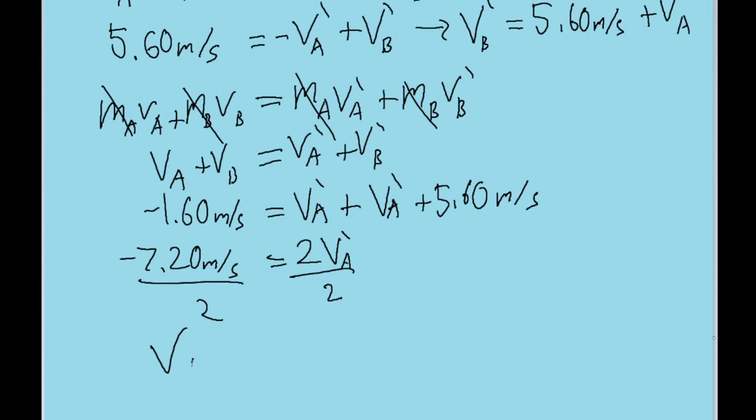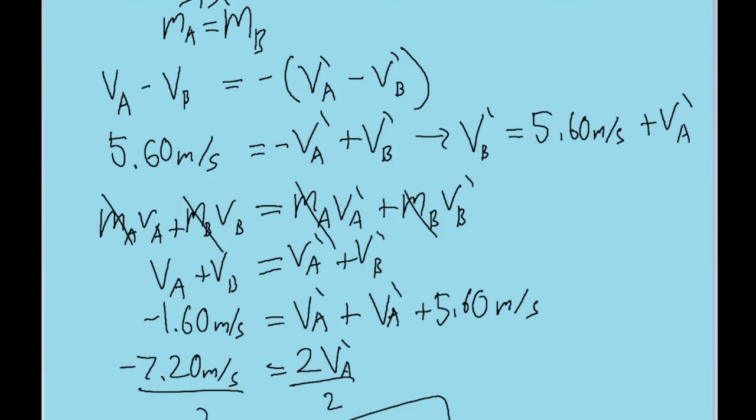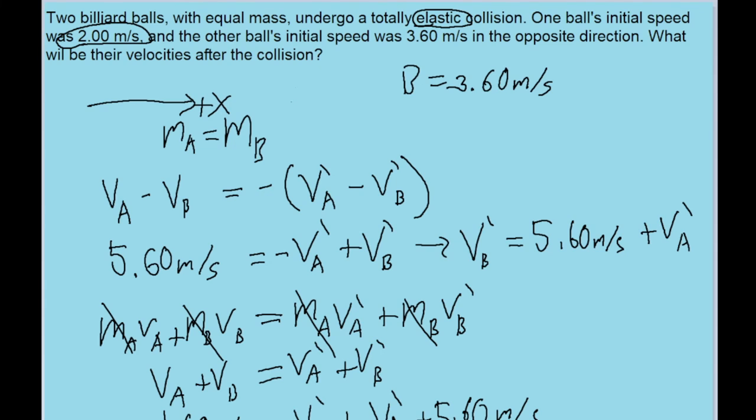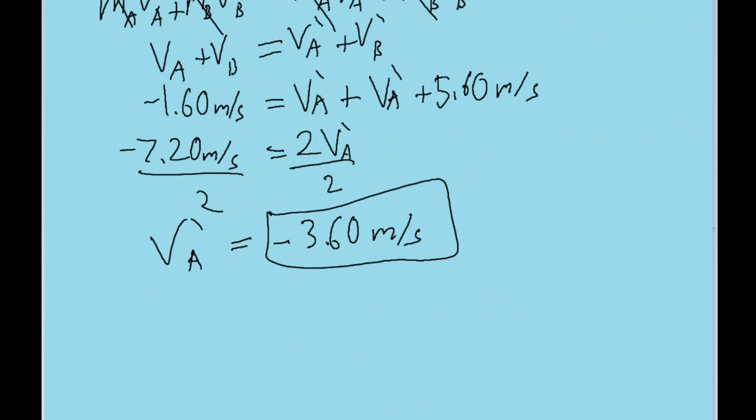And if we put this into our calculator, we find that V_A prime, the final speed for ball A, is equal to negative 3.60 meters per second. So this is the final speed of ball A. And since it's negative, that means it's moving in the opposite direction that it started with.